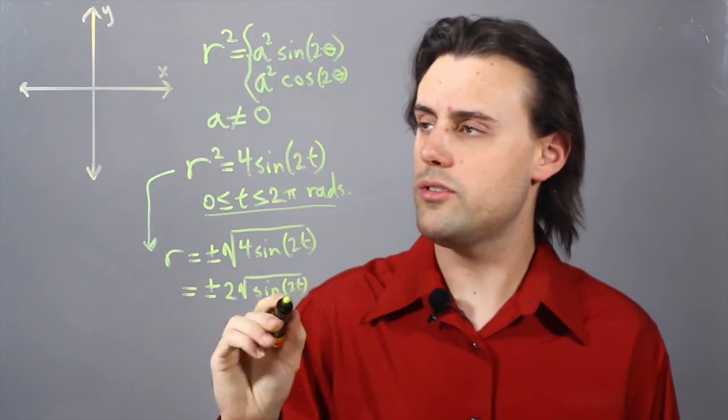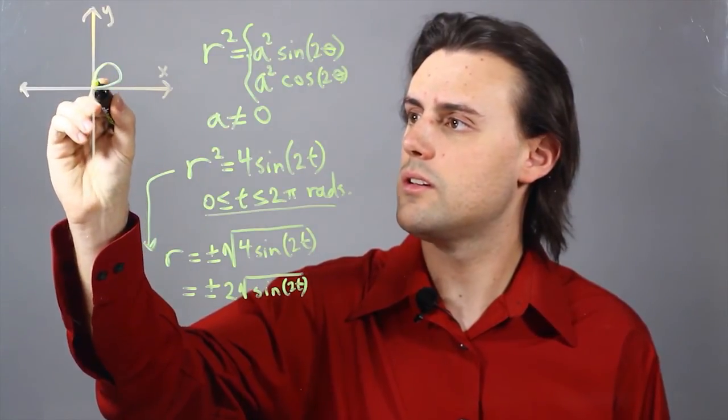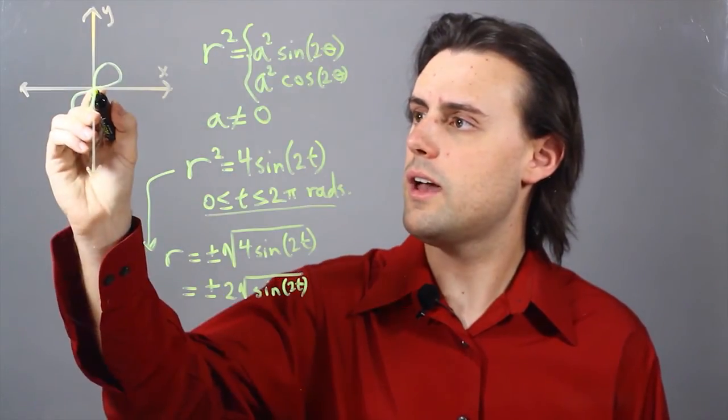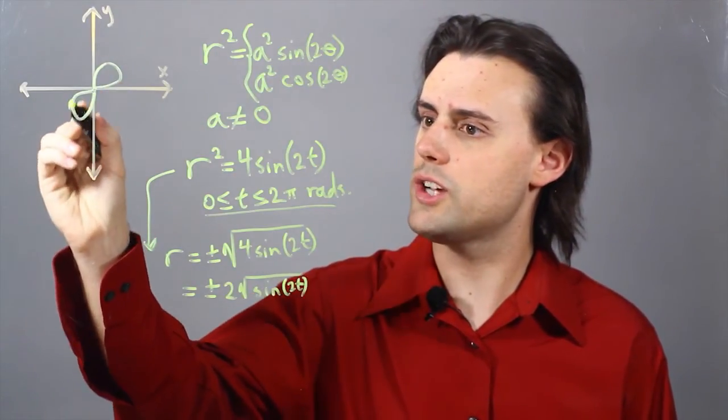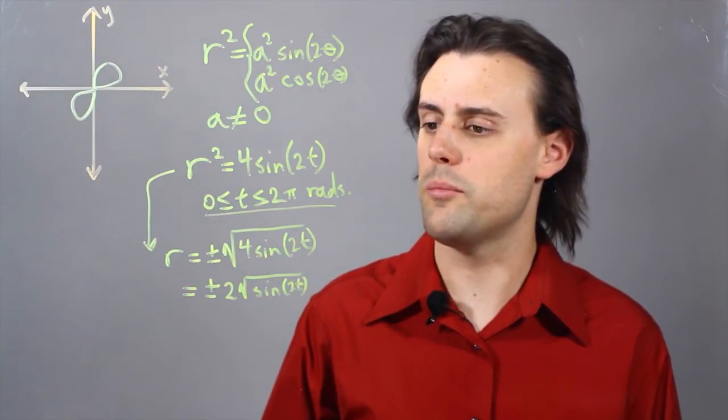So what this looks like is going to be something like this. There's two petals in this case, and you flow along the trajectory as you increase the angle for at least one period.